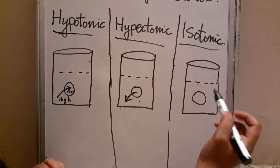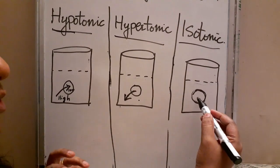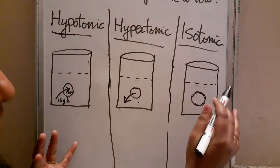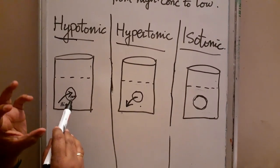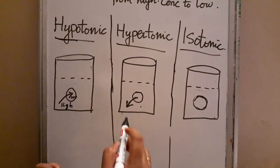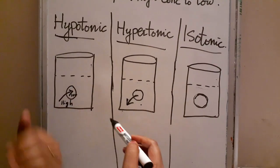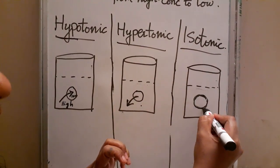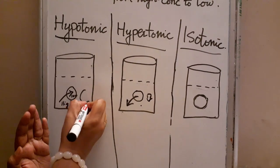In the case of isotonic solution, inside the cell and outside the cell the water concentration will be the same, so there will not be any net change. Hypotonic means water moves from outside to inside, making the cell swell up. Hypertonic means water comes out from the cell into the medium, so the cell will shrink. Isotonic means no change will happen to the cell.